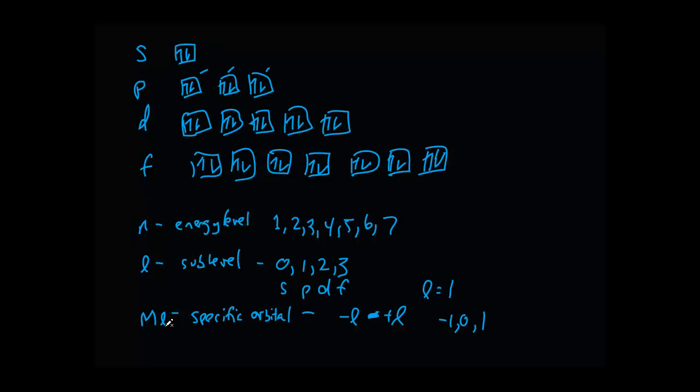If we were talking about the quantum number ML for a D, well it would be negative two to positive two. Negative two, negative one, zero, positive one, positive two. So it's really just another way to state the location of a specific electron. And when you know the location of it, it's going to tell you how much energy it has. So that's why we have these quantum numbers.